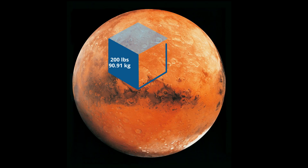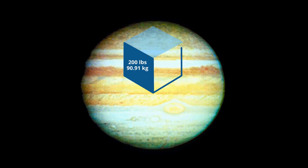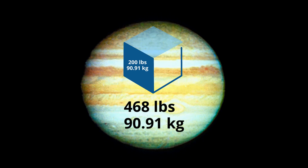On Mars the cube would weigh 76 pounds, but it still has the same mass of 90.91 kilograms. On Jupiter, the cube weighs 468 pounds, but still has the same mass of 90.91 kilograms.